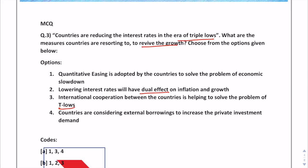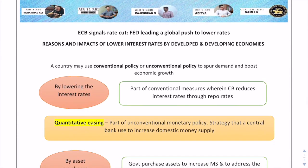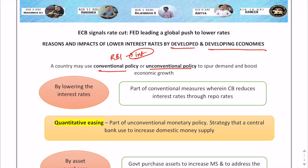Before answering the question, let us understand the concept of reasons and the impacts of lower interest rates by developed and developing economies. There are two types of monetary policies: conventional policy and unconventional policy. The conventional policy is wherein central banks like RBI implement their monetary policy through interest rates, which is the traditional measure. For example, when RBI reduces its repo rate, commercial banks also reduce their lending rate.